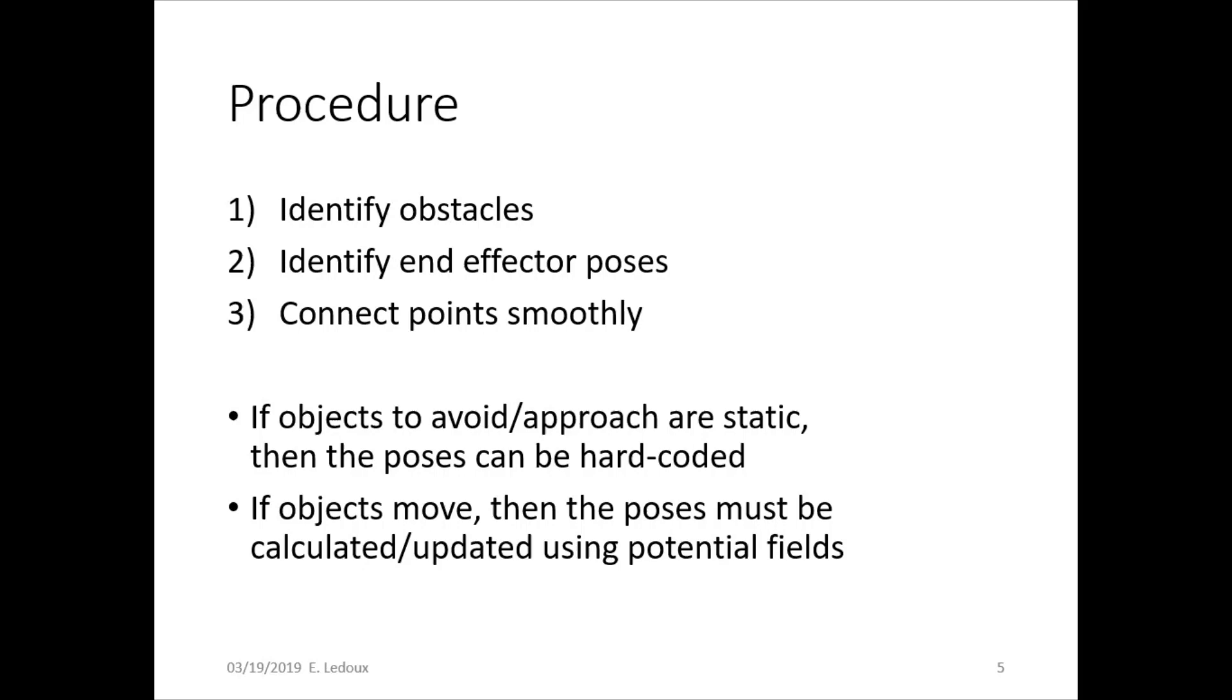Now, a potential field is basically sort of like using magnetism. If you identify what objects you want the robot to avoid, those would have negative potential, like a repulsive force, and then whatever points you want the robot to move to would have an attractive force. Then you can get an equation of that and sort of define an entire field that the robot would just go through in order to avoid the obstacles.